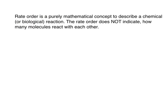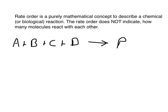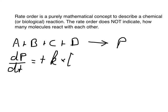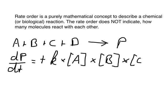So let's simply write a reaction. Let's say we have A plus B plus C plus D, and this should give us a product P. Now we can write for this product P the general rate equation, and we would say the change in P over time — dP over dt — equals a positive rate constant times the concentrations of A, B, C, and D.